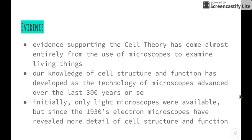We also need to describe evidence that supports the cell theory. Evidence supporting the cell theory has come about almost entirely from the use of microscopes to examine living things. All the way back in the 1600s, very simple microscopes were able to magnify things enough to see microscopic features, in particular cells. Our knowledge of cell structure and function has developed as the technology of microscopes has advanced over the last 300 years or so.